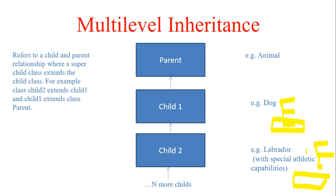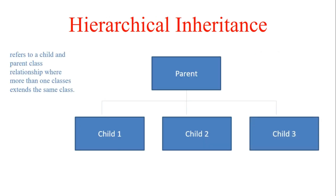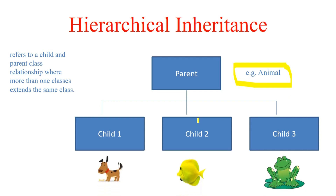Hierarchical inheritance refers to a child-parent relationship where more than one class extends the same class. For example, Animal is the parent and Dog, Fish, and Frog are all child classes. All of them share common functionality inherited from Animal — such as having two eyes. Dog has two eyes, Fish has two eyes, Frog has two eyes — all extending the same functionality from the parent.